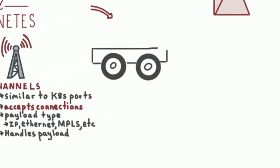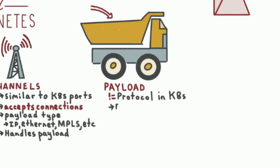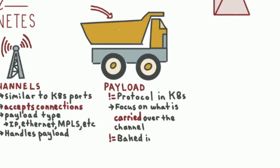The second point at which we deviate is instead of having protocol, we have payload. We do this because we want to focus on what's carried over the channel to avoid baking in the tunneling mechanism. Because if I have an IP packet or an Ethernet frame as my payload, in networking we have many, many ways this could be gotten from one pod to the pod that provides the network service. We don't want to bake that into the service description — we want to let the infrastructure work that out.